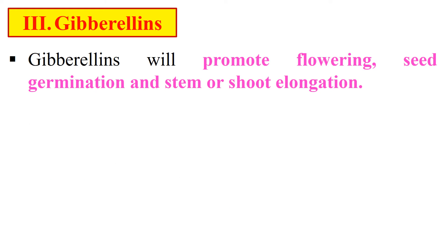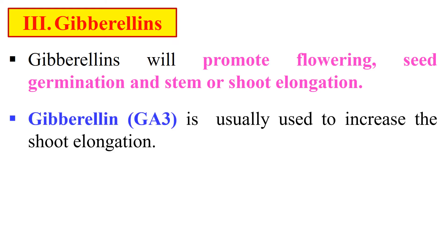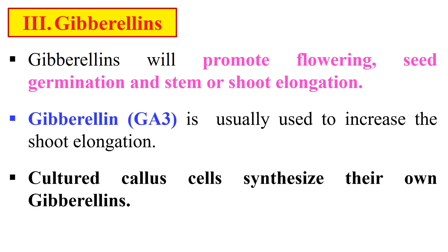Next, gibberellins. Gibberellins promote flowering, seed germination, and shoot elongation. There are generally over 20 known gibberellins, but GA3 (gibberellin 3) is usually used to increase shoot elongation. Cultured cells synthesize their own gibberellins, so we generally do not need to add gibberellins to the culture media — cultured callus cells can make sufficient gibberellins for growth.